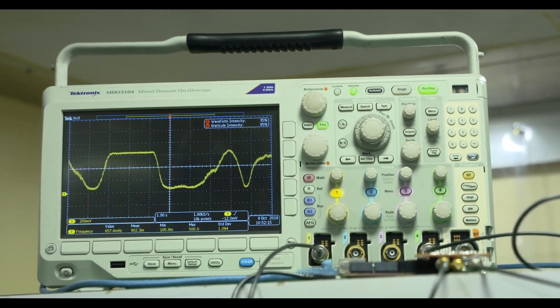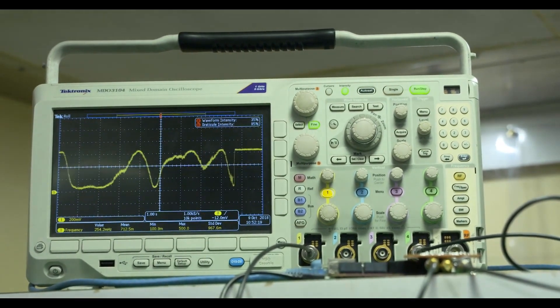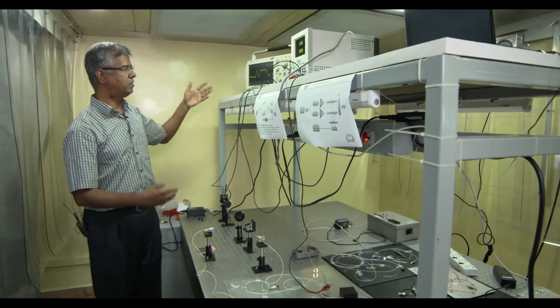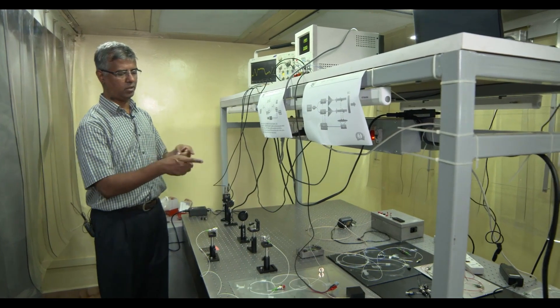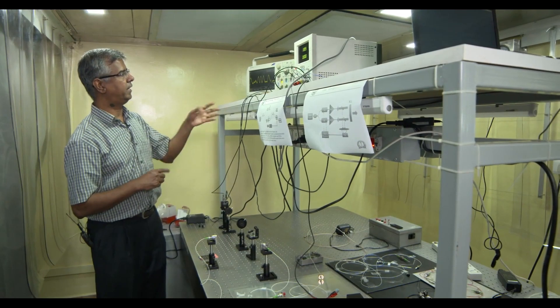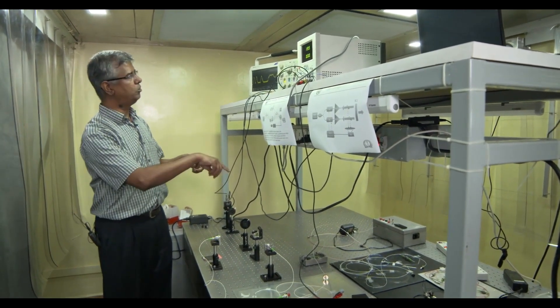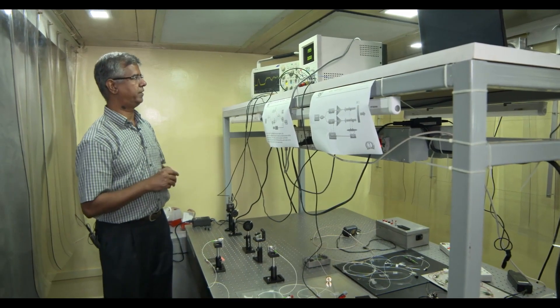So if you look at the oscilloscope screen over here, you see that the output is wildly fluctuating. That is because the phase of these two arms are not synchronized with respect to each other and that is because the feedback loop is not closed right now.